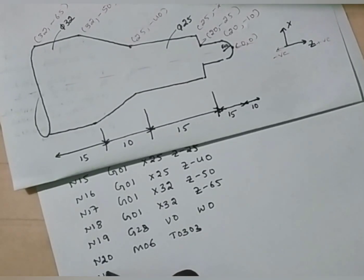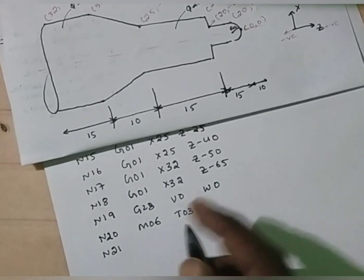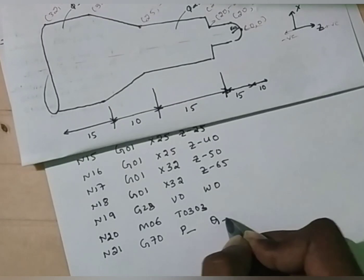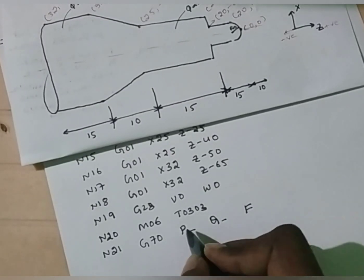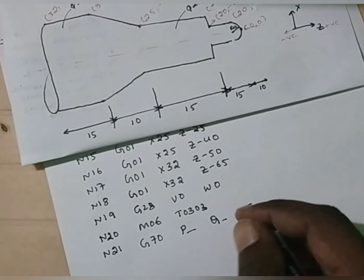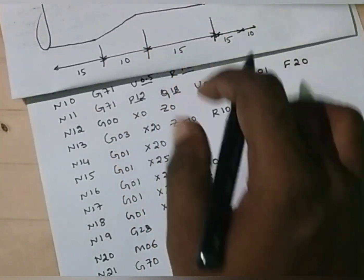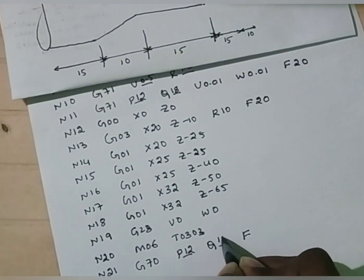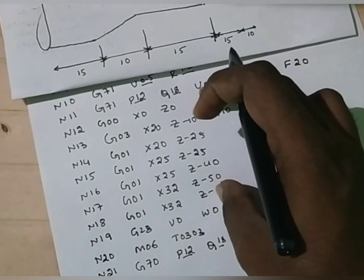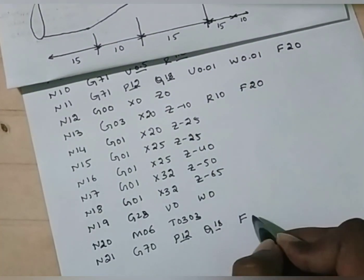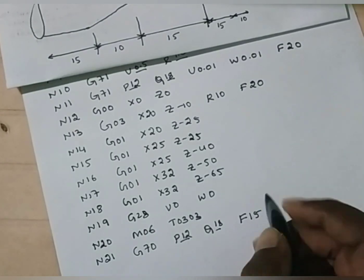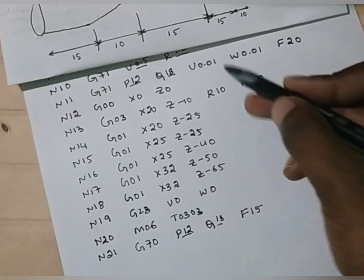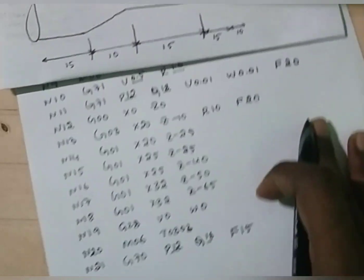Now write the syntax for the finishing cycle. The syntax for finishing cycle is G70, P value, Q value, and feed value. Here, P value is the starting block number and Q is the ending block number — I am going to choose the same values. P value is 12, Q value is 18, because at these steps only you have to do the finishing operation. Feed value, let it be 15 mm per revolution. Now I have completed all the operations: facing, step turning, and finishing.